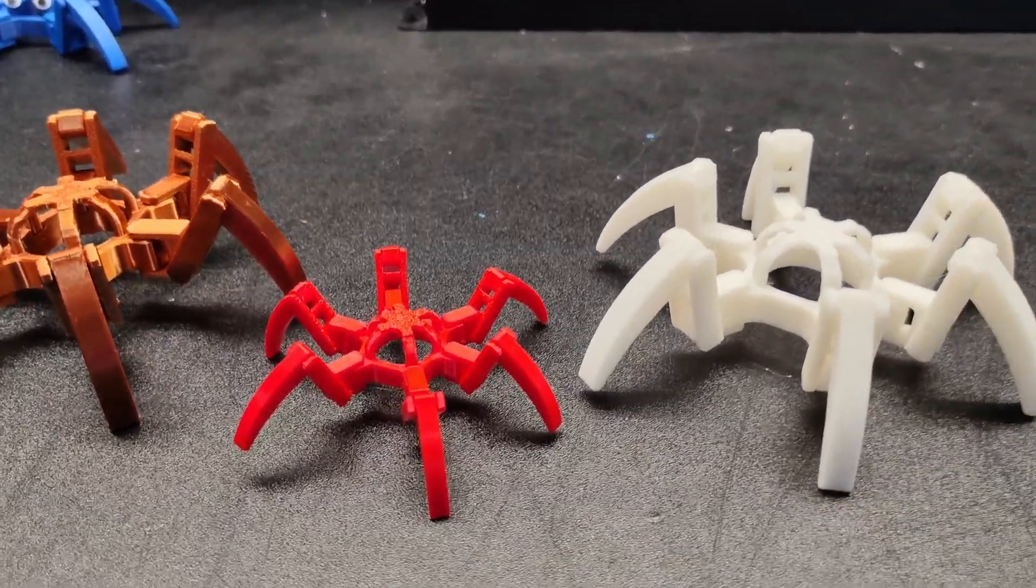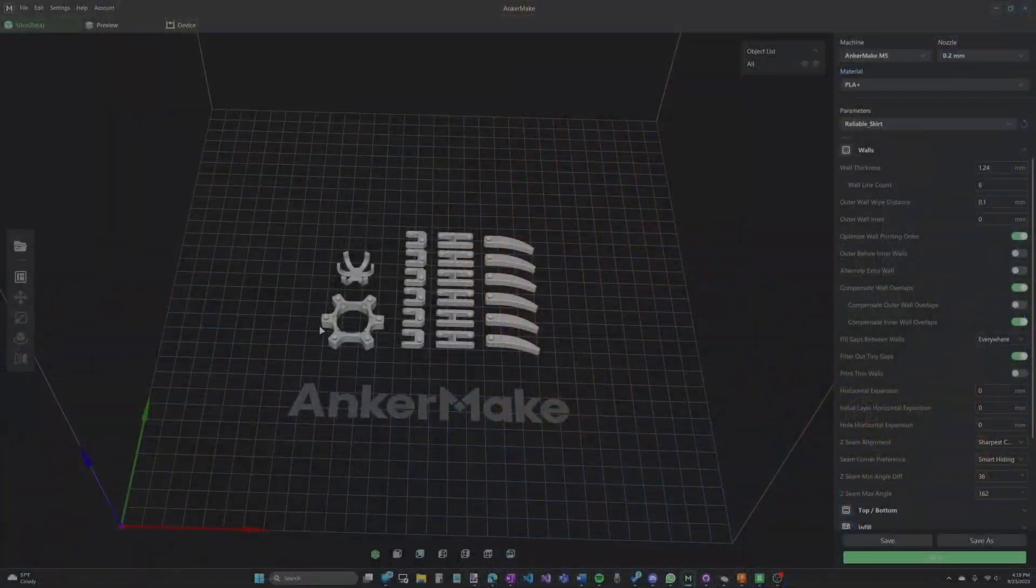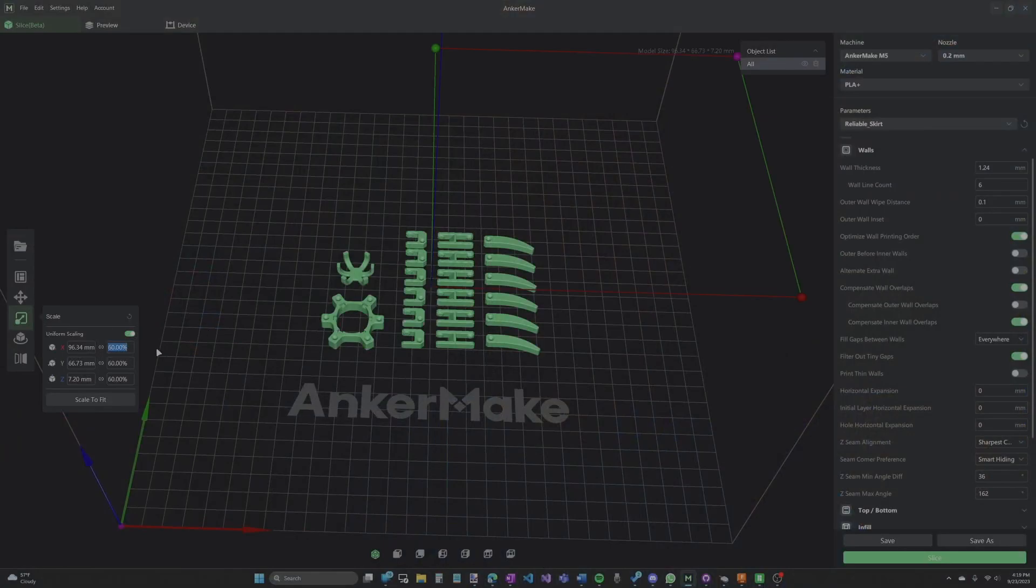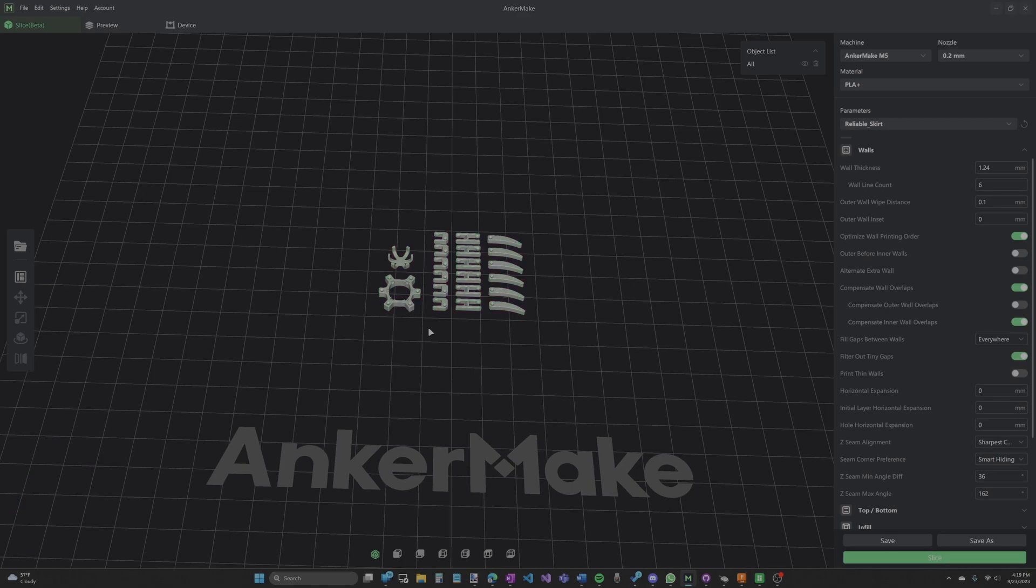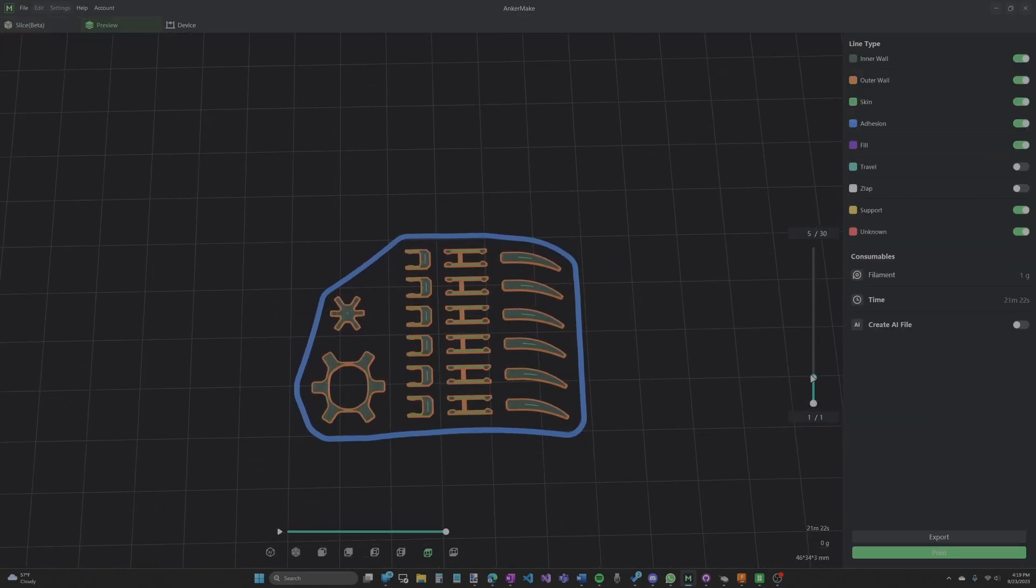Seeing it print out something so detailed at such a small size was pretty awesome, but could it go smaller? I went back into the slicer and set the scale to 25%. This felt way too small in the slicer, and I didn't think there was any way this actually printed. But I was wrong.